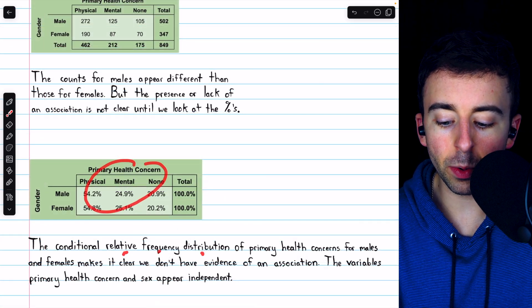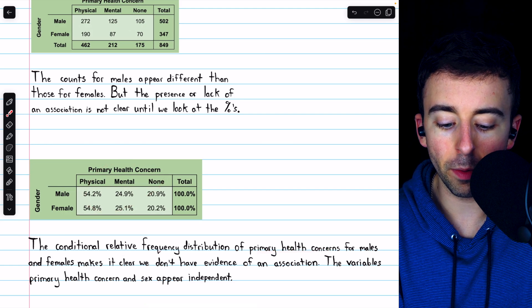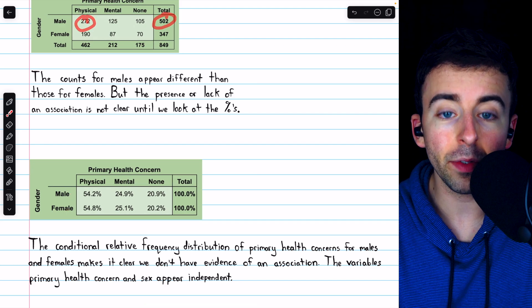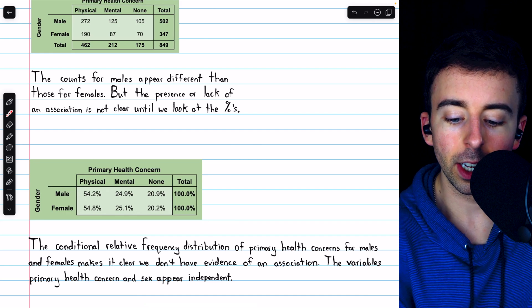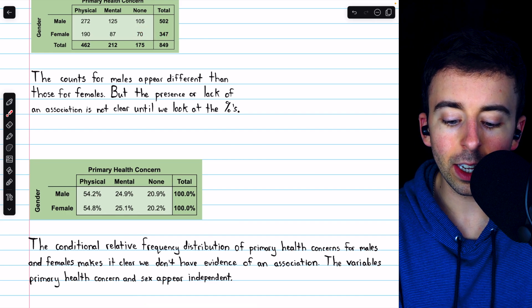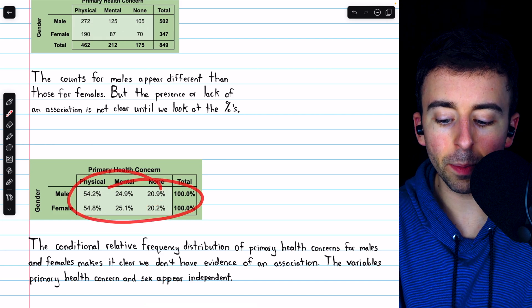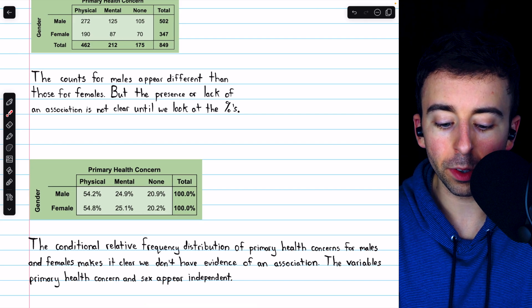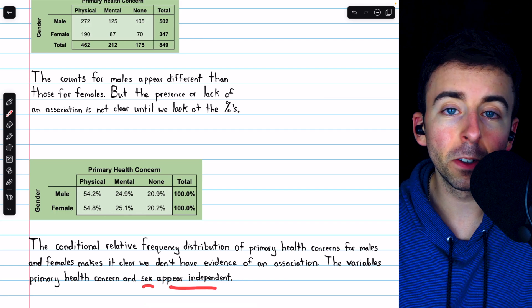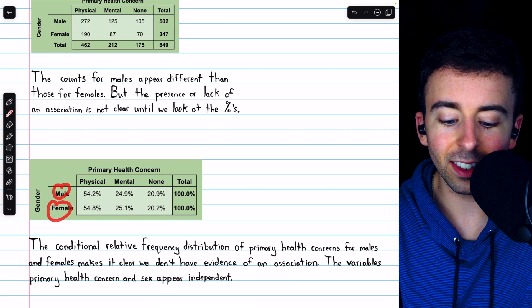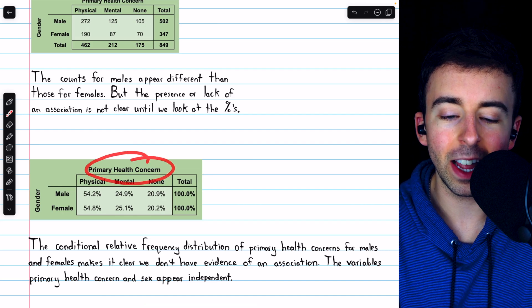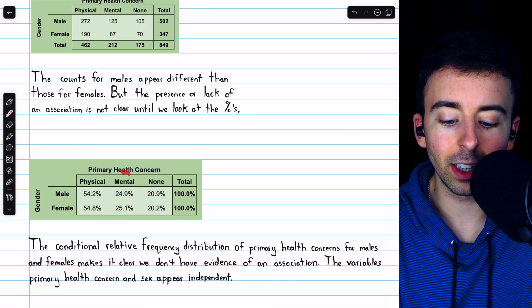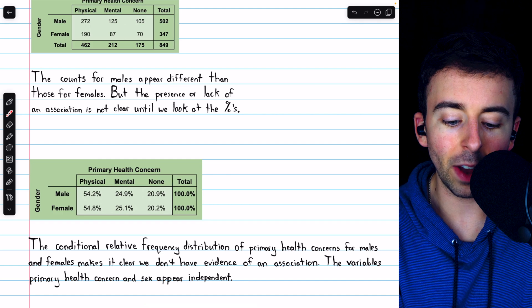So here is the conditional relative frequency distribution of primary health concerns for males and females. So I've conditioned on gender, for example, 272 divided by 502 is 54.2 percent, 70 divided by 347 is 20.2 percent. Now that we're looking at the percents, we can see very clearly that we do not have any evidence of an association. The variables primary health concern and sex appear to be independent. Knowing somebody's sex doesn't really help you predict what their primary health concern is. If I know someone was female, well, there's a 25.1 percent chance that mental health concerns were their primary concern. If I know someone was male, there's a very similar likelihood that mental health concerns were their primary concerns.